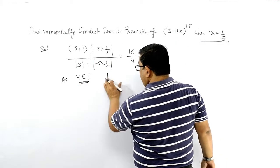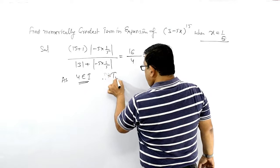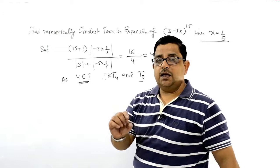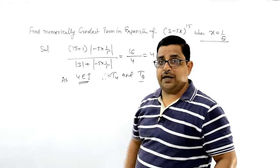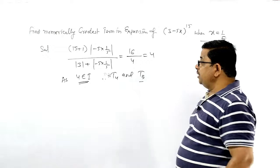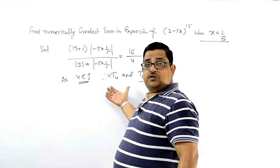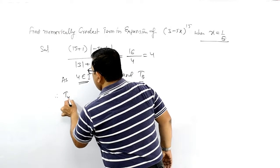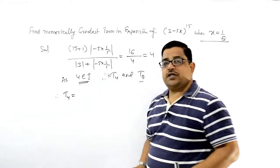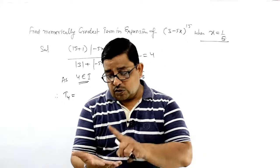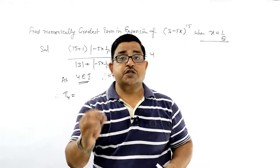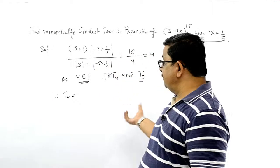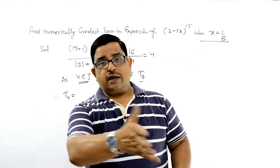Therefore, T4 and T5 — एक term बढ़के आएगा, Tp and Tp+1 will be the numerically greatest term. So T4 and T5 will be the numerically greatest terms. अब यह values निकाल सकते हैं, T4 निकालेंगे। Exam में दो तरह के questions आ सकते हैं — वो बोल सकता है: find which term will be the numerically greatest.